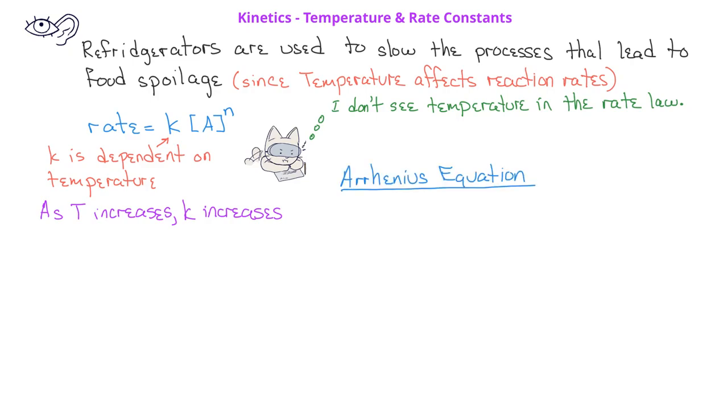In this equation, the capital A is the frequency factor, which is a constant particular for a given reaction. In the exponential term, we have the R, which is a gas constant, but since we're talking about energy, we'll use the value of the gas constant, 8.314 joules per mole kelvin.